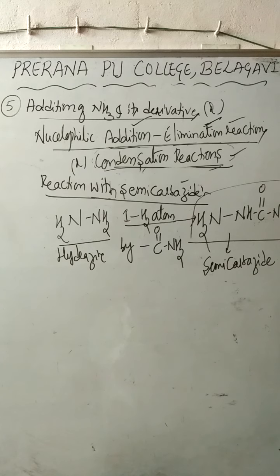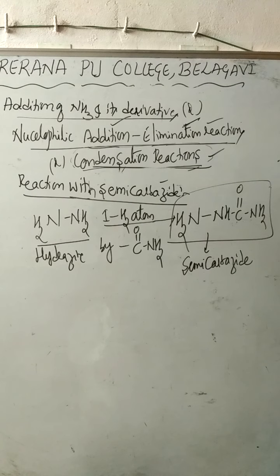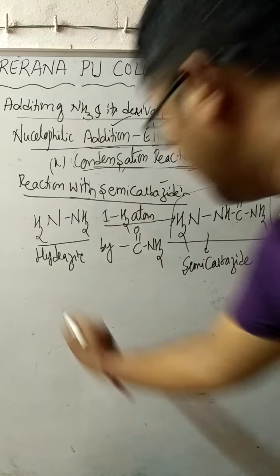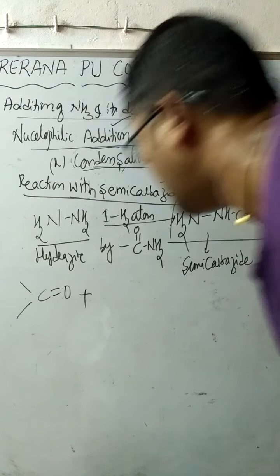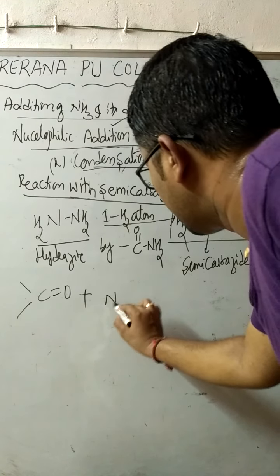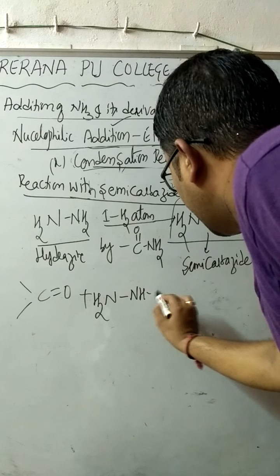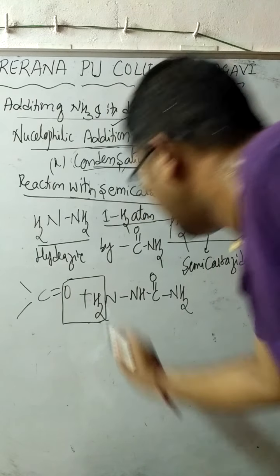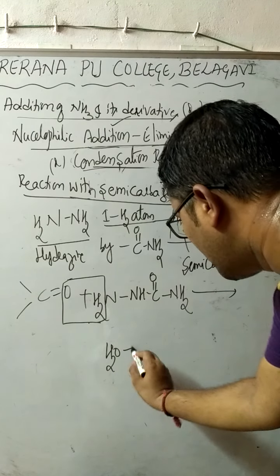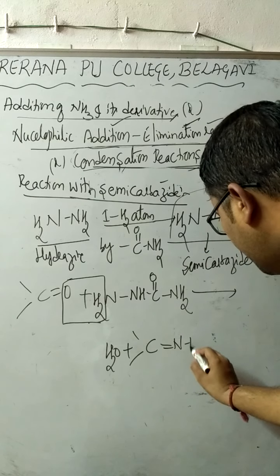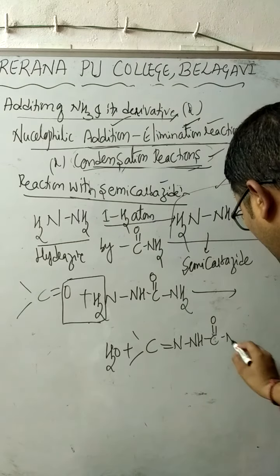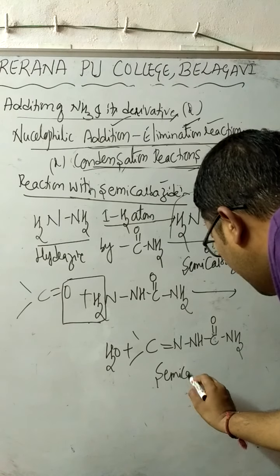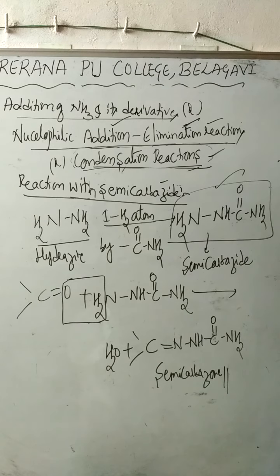In the reaction of semicarbazide (NH2-NH-C(=O)-NH2) with an aldehyde or ketone, a water molecule is eliminated. The product left is C=N-NH-C(=O)-NH2, which is called a semicarbazone as the major product. So again, elimination of water takes place.